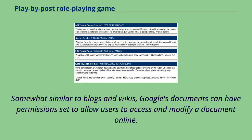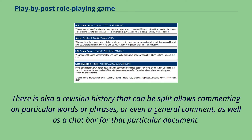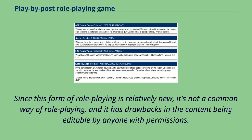Somewhat similar to blogs and wikis, Google's documents can have permissions set to allow users to access and modify a document online. This allows multiple users to edit the document at the same time, meaning that others can modify the story online. There is also a revision history that can be split, allows commenting on particular words or phrases, or even a general comment, as well as a chat bar for their document. Since this form of role-playing is relatively new, it's not a common way of role-playing, and it has drawbacks in the content being editable by anyone with permissions.